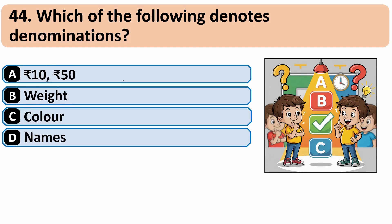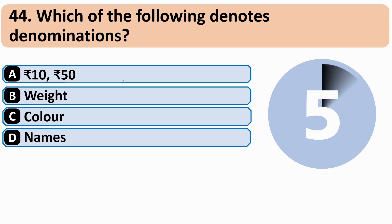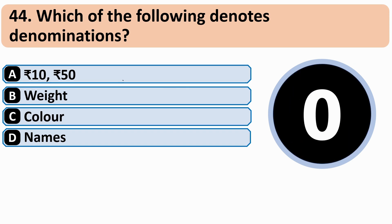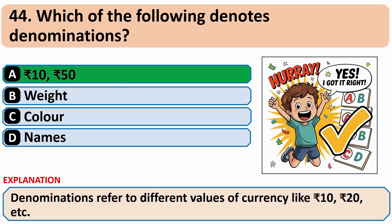Which of the following denotes denomination? The correct answer is A — Rupee 10, Rupee 50, Rupee 100 and so on.